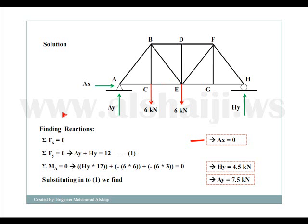For the summation of forces in the Y direction: AY minus 6 minus 6 plus HY equals zero, which simplifies to AY plus HY equals 12. That gives us our first equation. The third equation comes from the summation of moments about a point.